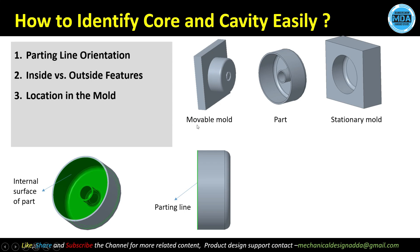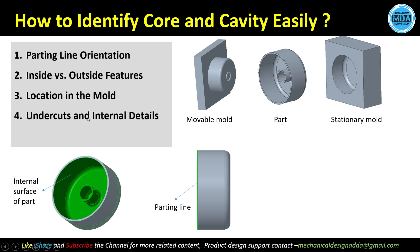Based on location in the mold: the stationary mold is generally on the cavity side and the movable mold is generally on the core side. Undercuts, holes, and recesses come under the core side.